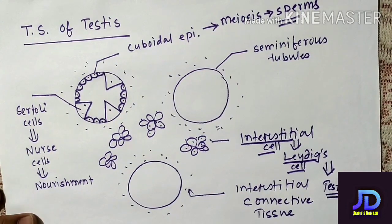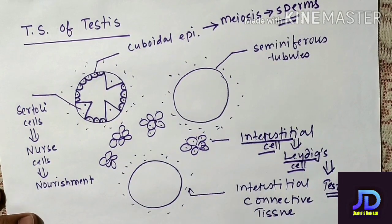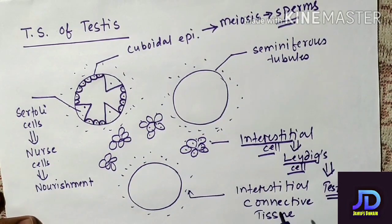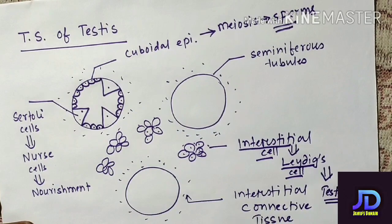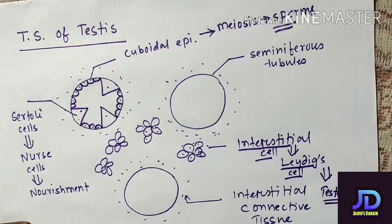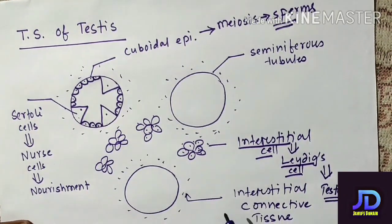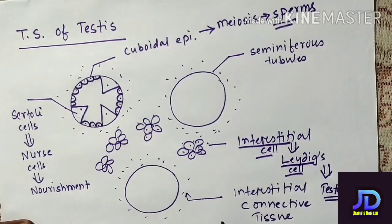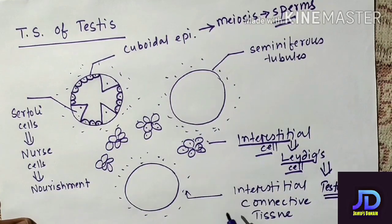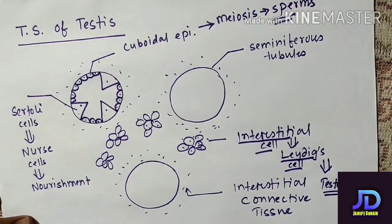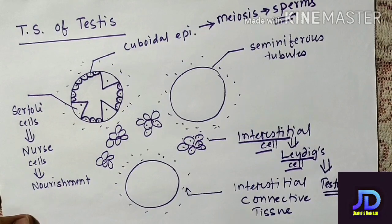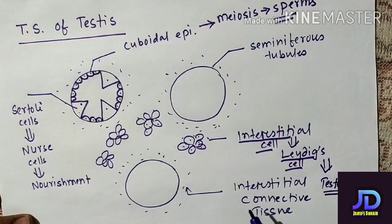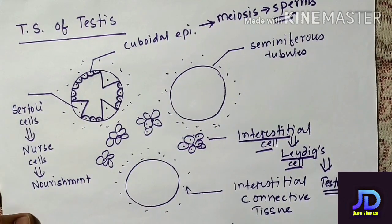To summarize: the testes are oval in shape and the outermost covering is called tunica albuginea, which undergoes infolding resulting in the formation of septum. Because of septum formation, compartments called testicular lobules are formed. In each testicular lobule there are fine coiled tubular structures called seminiferous tubules where sperms are produced. The straight part of seminiferous tubules join to form rete testis, which opens into vasa efferentia, which leads into the epididymis where sperms are stored temporarily.